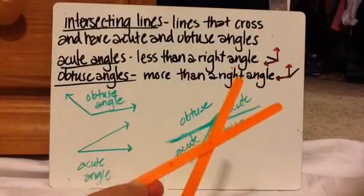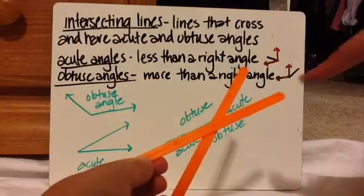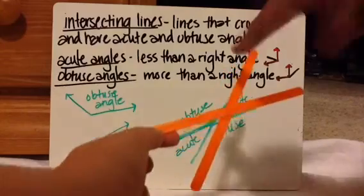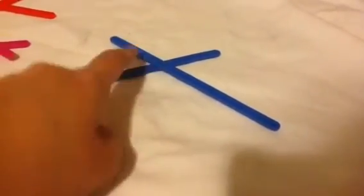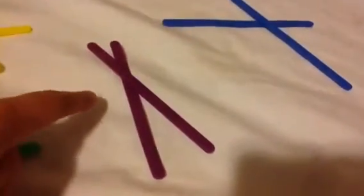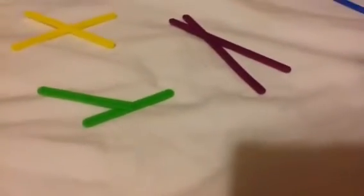Here's an example of intersecting lines. This angle right here is acute — it's small — and the one opposite it is also acute. Over here, see how wide open this is? That's obtuse, and the one on top is also obtuse. Looking at more pictures: clearly acute and obtuse angles — obtuse, obtuse, acute, acute.